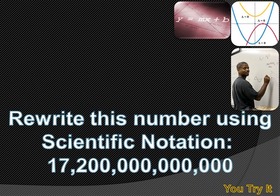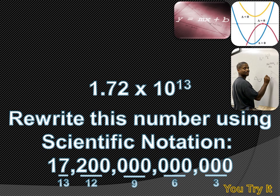We're asked to rewrite this huge number using scientific notation. We need to move our decimal point so it's between the 1 and the 7, giving us a single-digit number followed by some decimal places. We have to move the decimal 13 spaces, so the answer is 1.72 times 10 to the 13th.